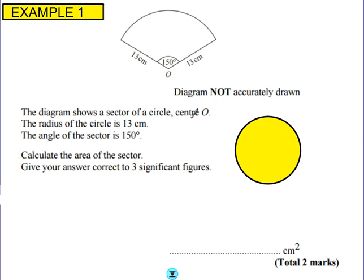So example 1. The diagram shows a sector of a circle, centre O. The radius of the circle is 13 centimeters. The angle of a sector is 150 degrees. Calculate the area of the sector. Give your answer correct to three significant figures.